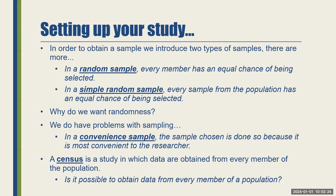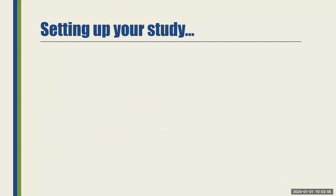Is it possible to obtain data from every member of a population? If you think about the U.S. census conducted every 10 years, we have problems — we can't count every single person because we have individuals who are homeless and may not have an address, or folks living off the grid where it's impossible to find or reach them. So the question is: is our census necessarily accurate? It's a bit difficult depending on how large our population is.